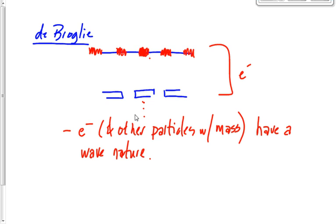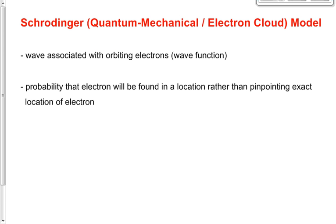All right, that takes us to the last model of the atom that we'll do this year. In fact, the last thing that we want to do here today. We call it the Schrodinger, or sometimes we call it the quantum mechanical, or sometimes we call it the electron cloud model of the atom.